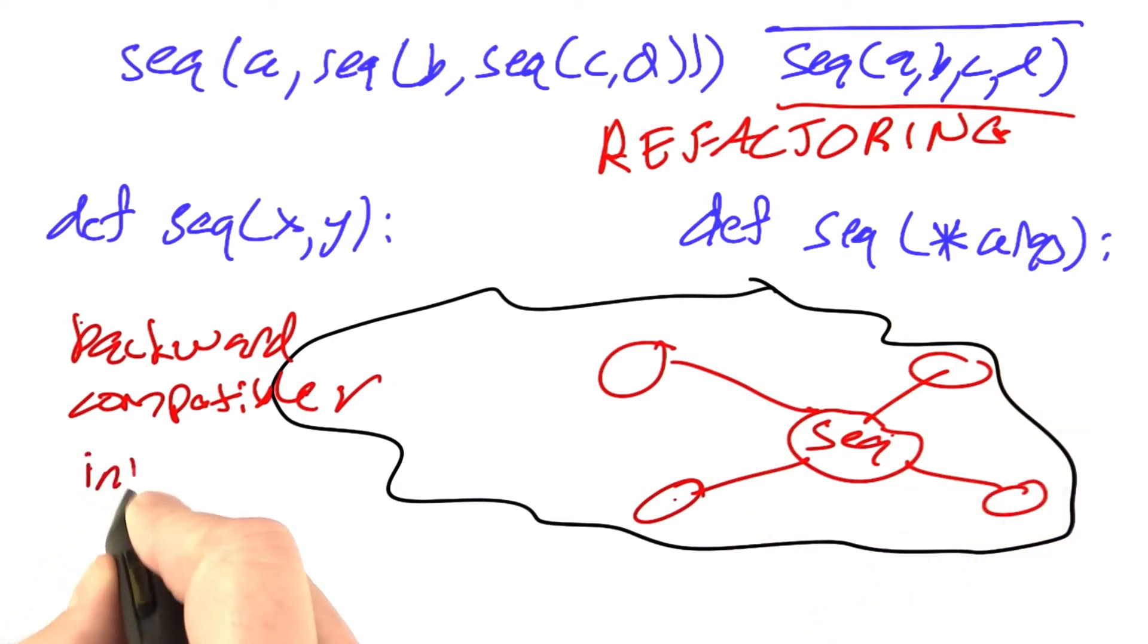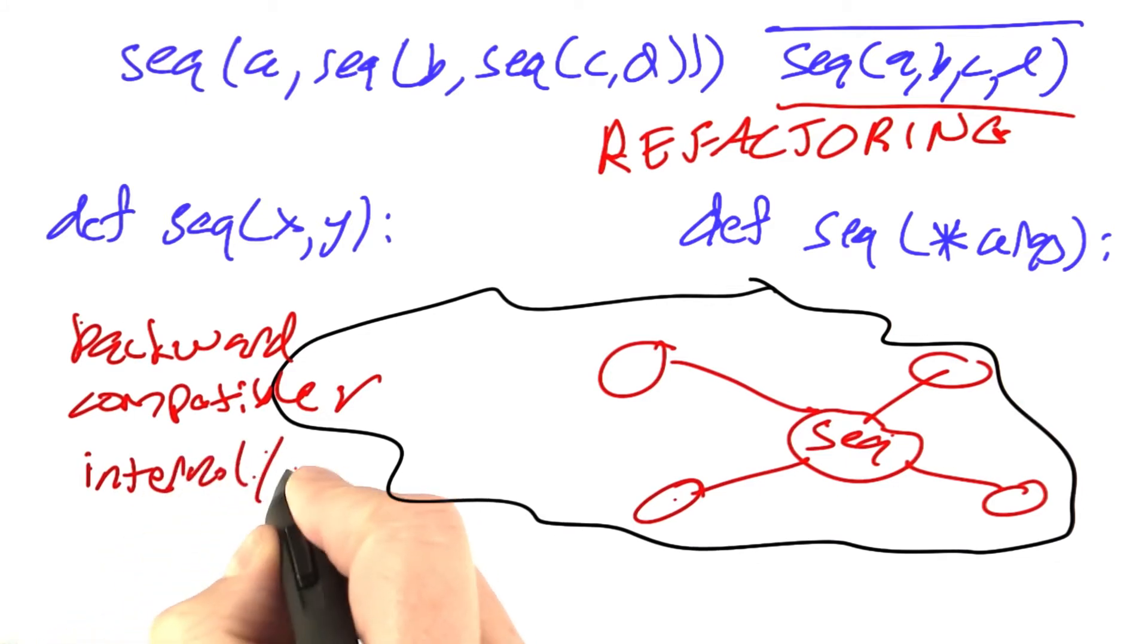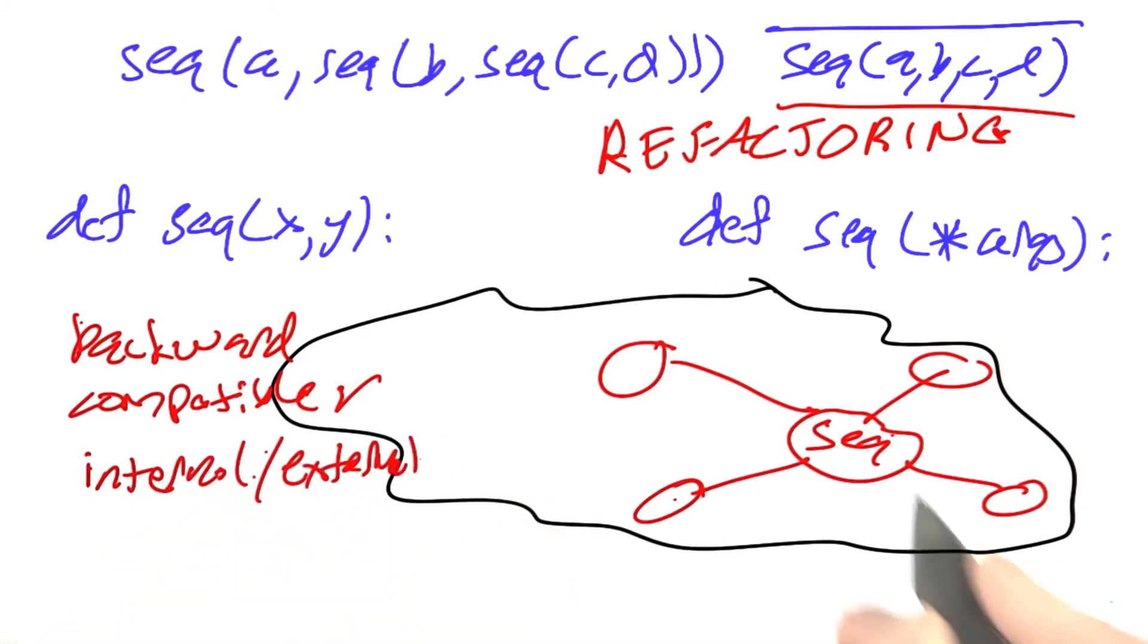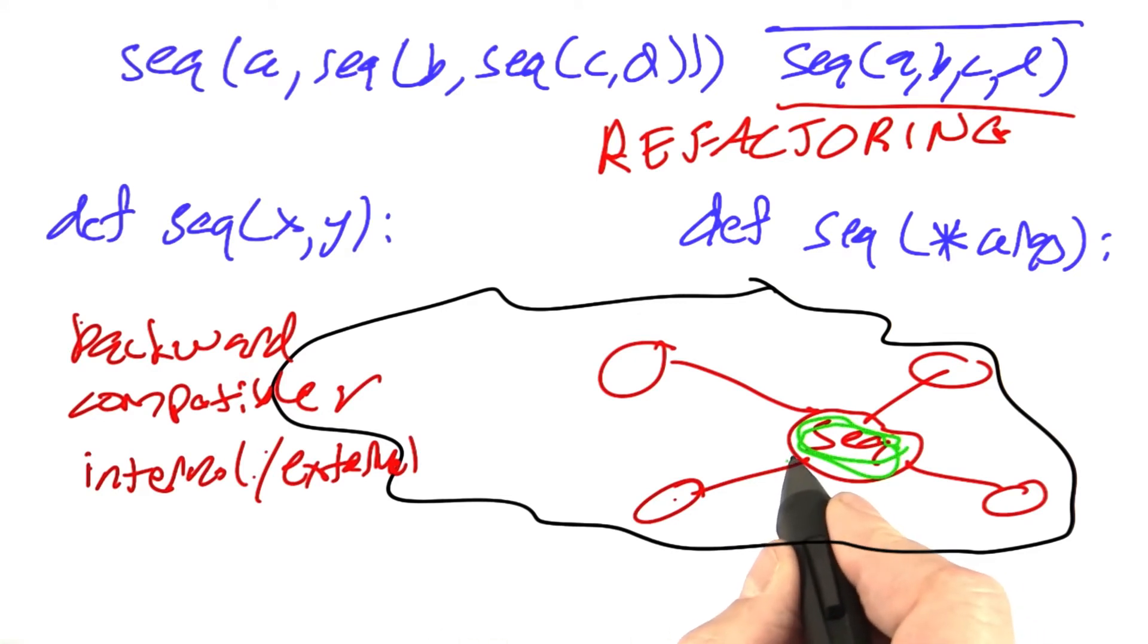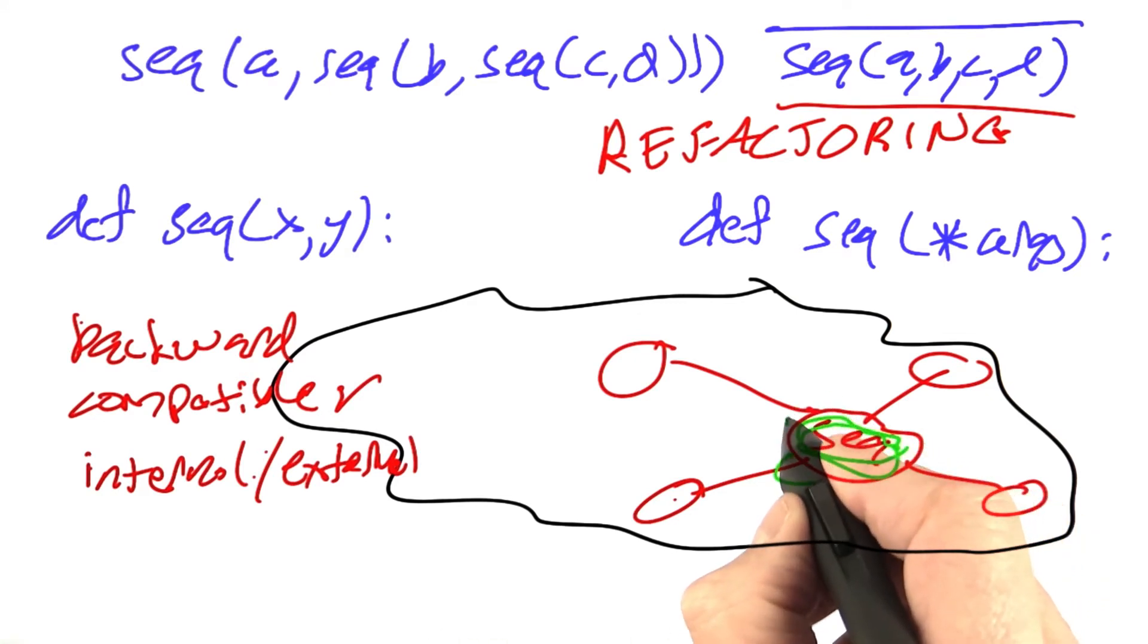Then the second factor is whether the change is internal or external. Am I changing something on the inside of sequence that doesn't affect all the callers? Then that's okay, and in general that's going to be backwards compatible. Or am I changing something on the outside, changing the interface to the rest of the world?